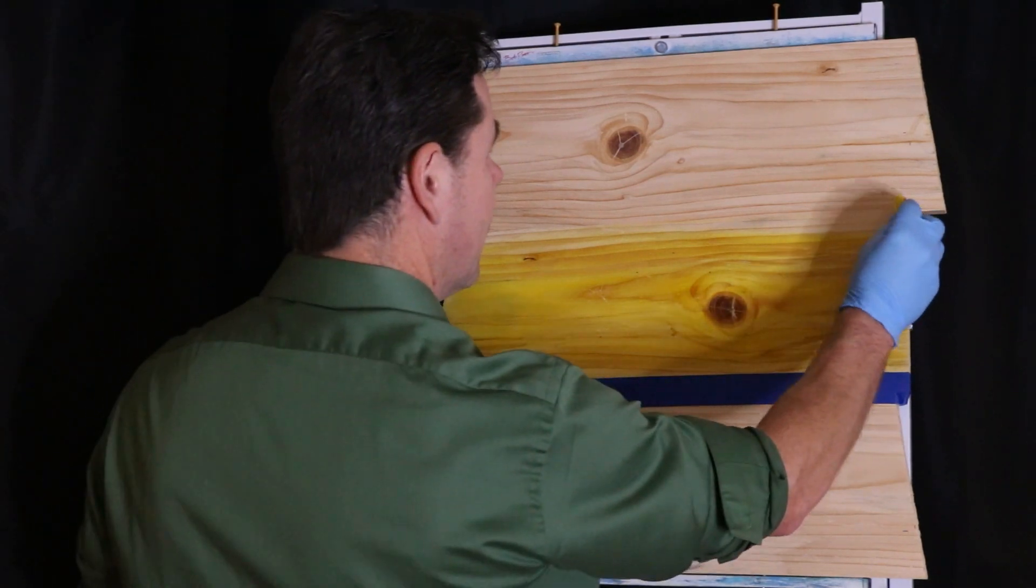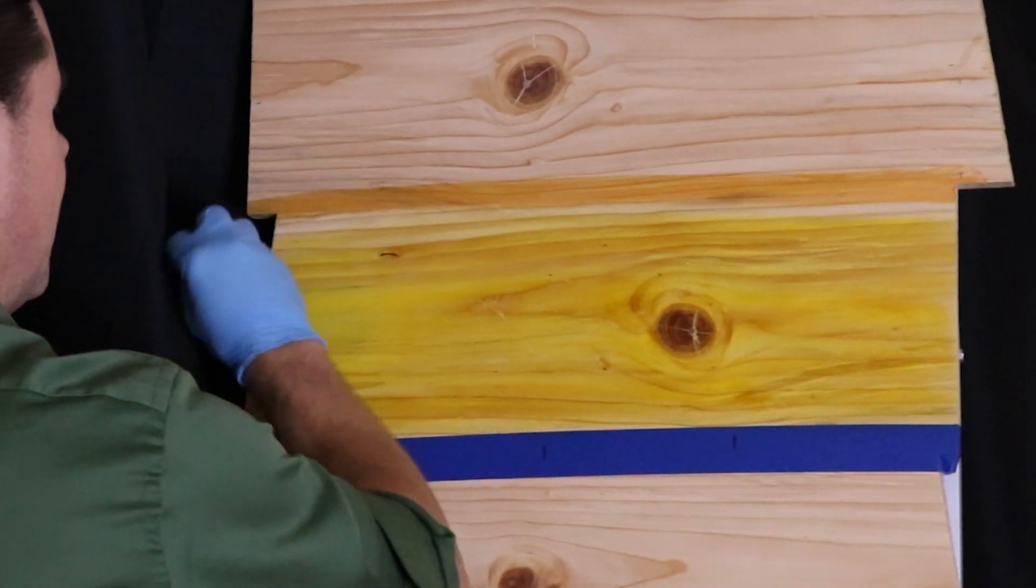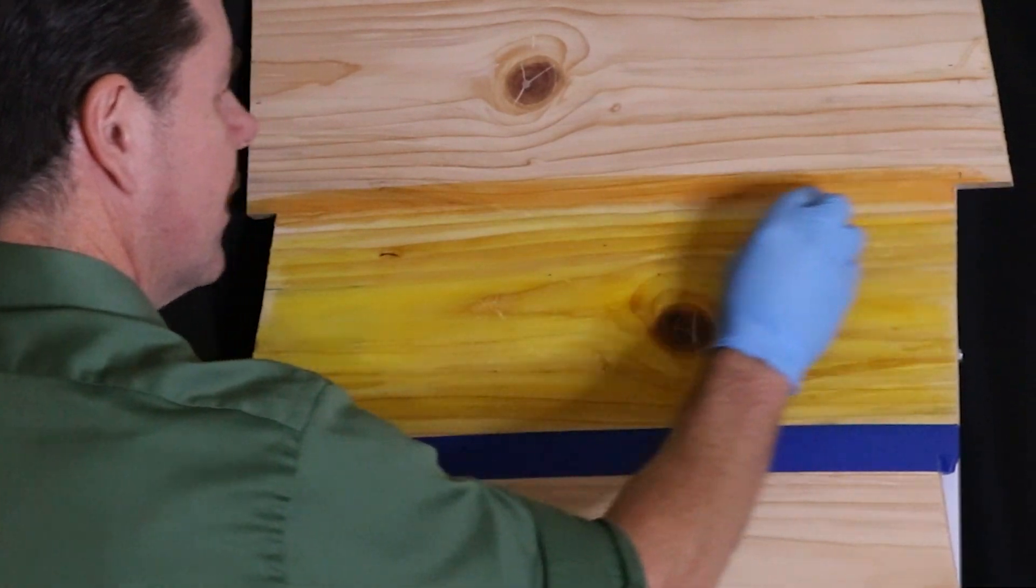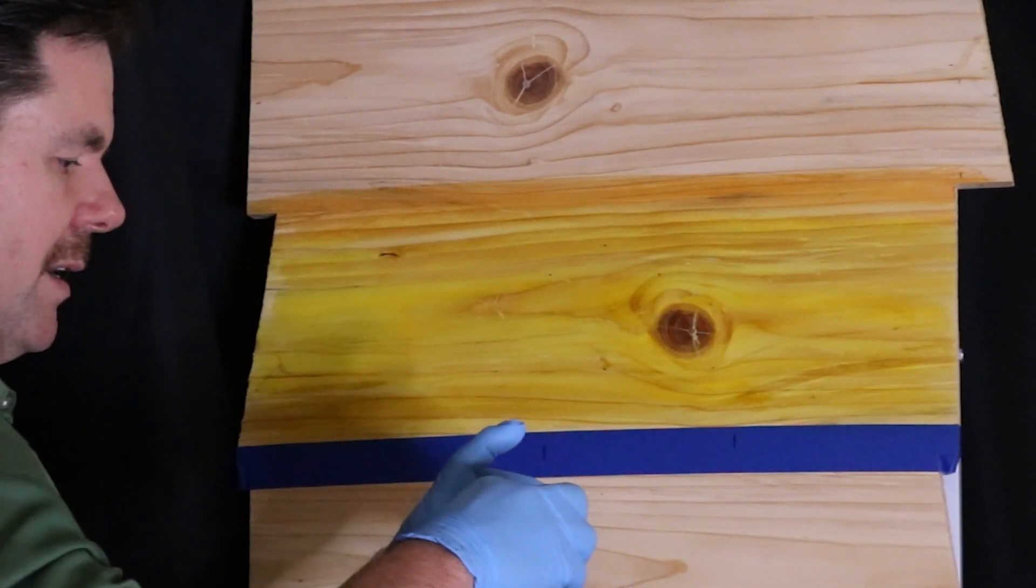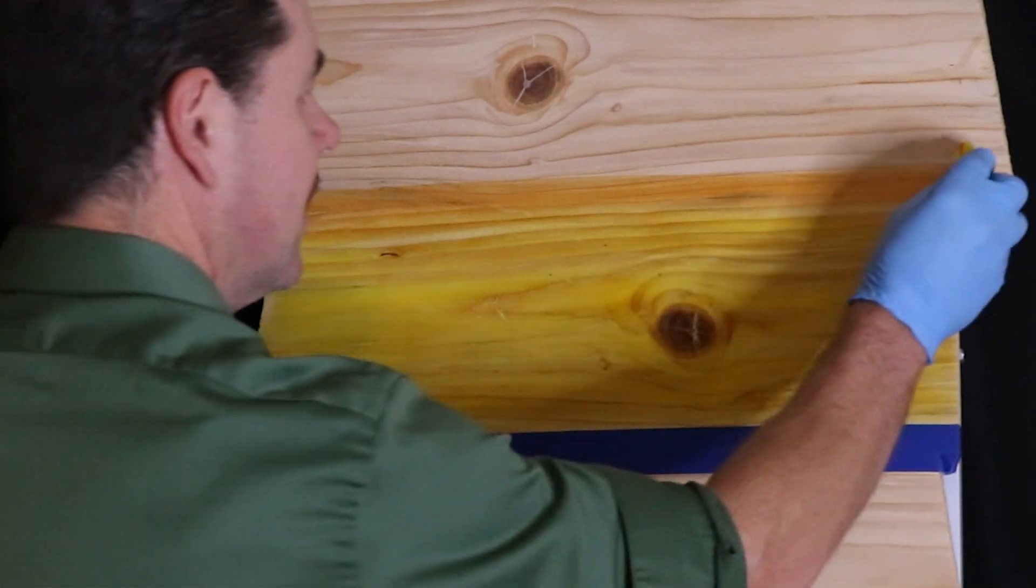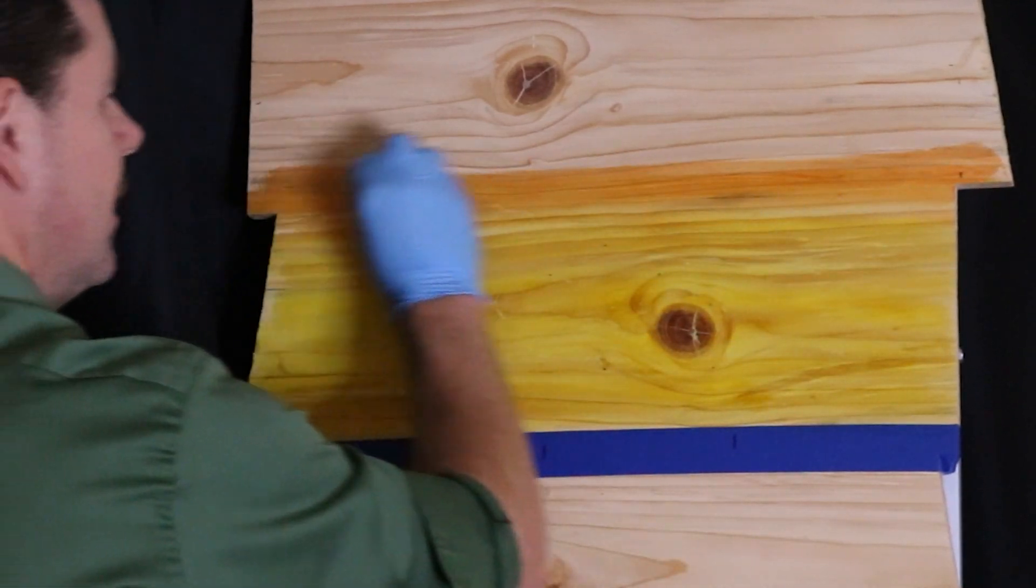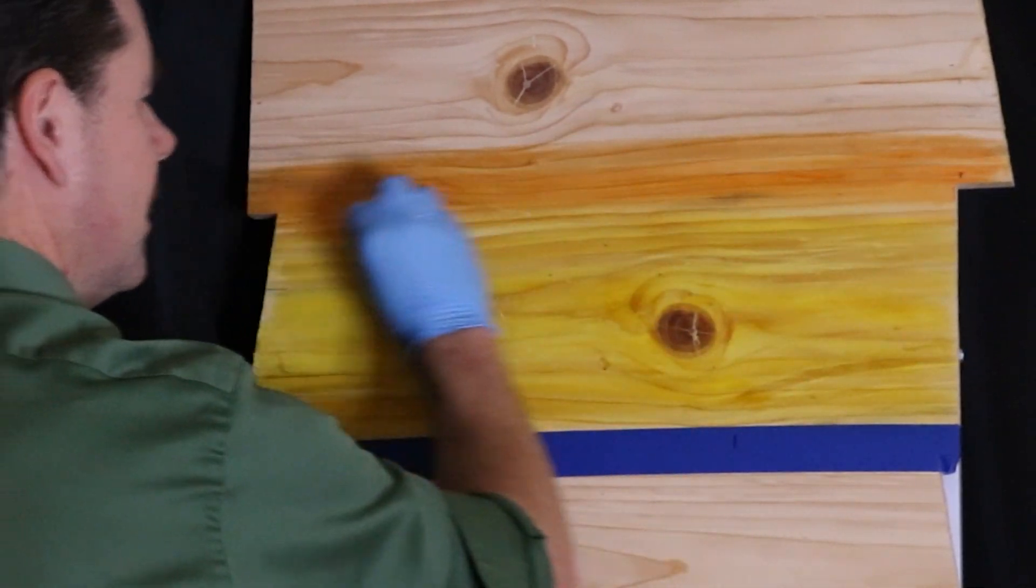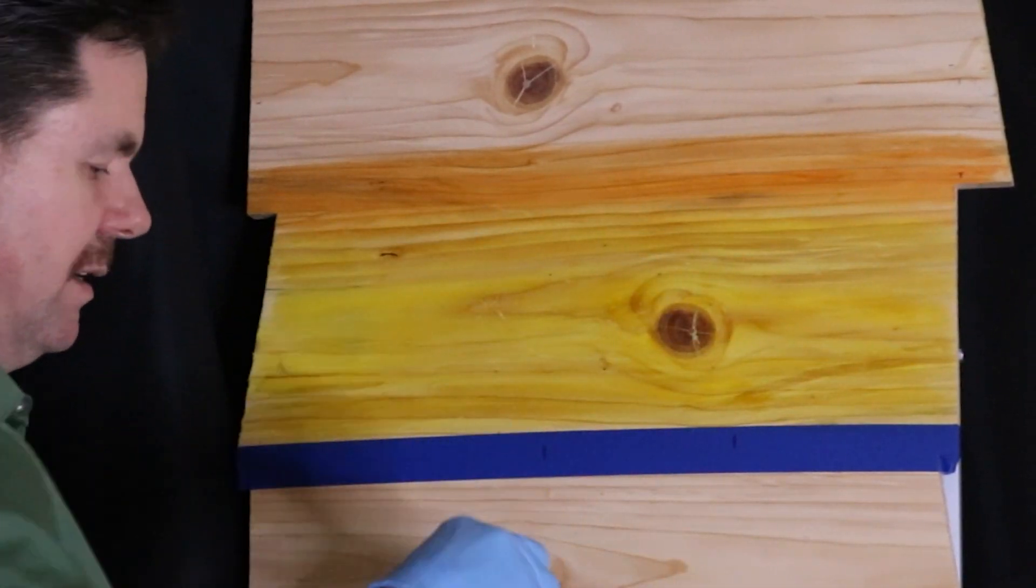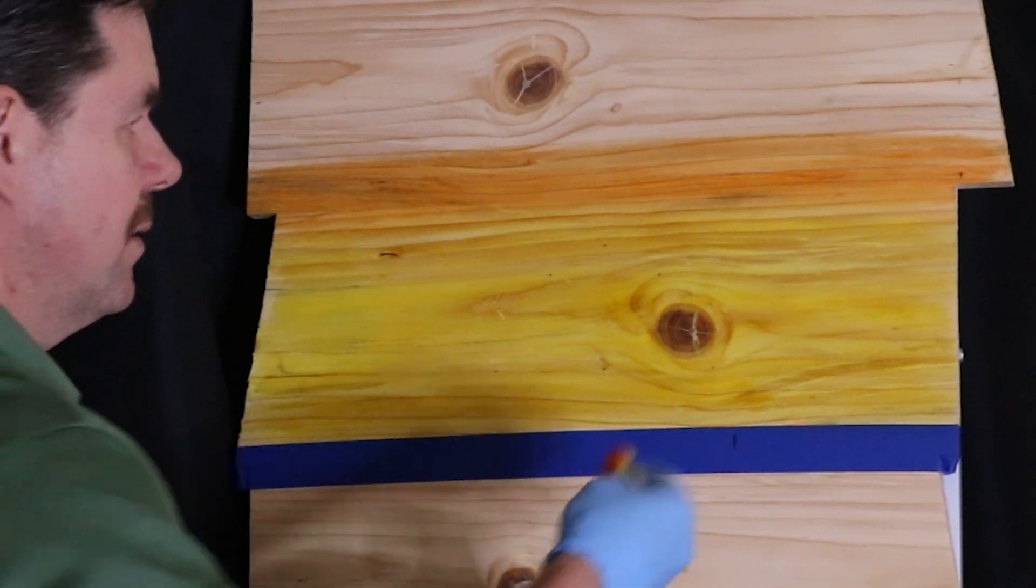Alright so I'm going to go into my orange now. I'm going to make sure I'm going a little longer strokes here. I get a little more on my rag. And I'm just using the same dirty oil rag here for the orange. And I'm going to blend that down into the yellow.